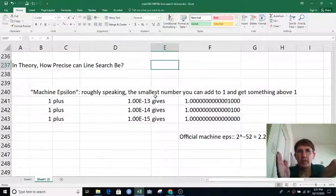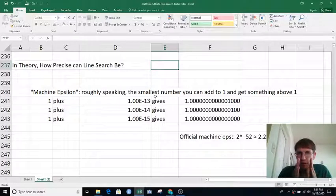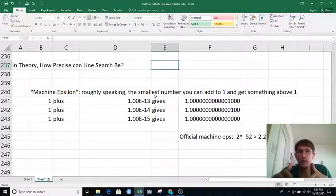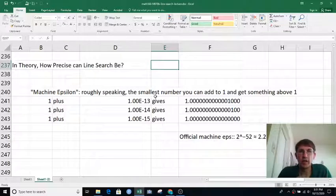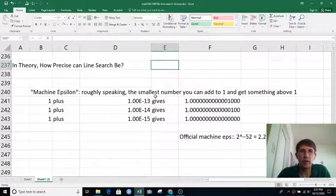So we were just asking, how precise can a line search be? How much can I narrow down the x value? For that we have to talk about how much roundoff goes on in computers and here's what typically happens.